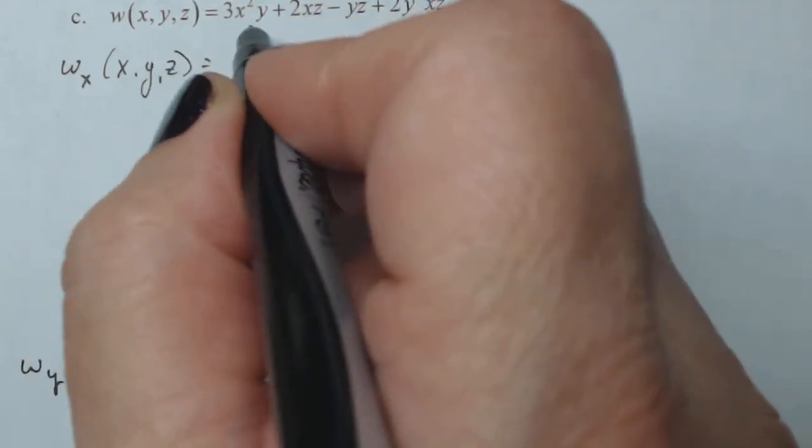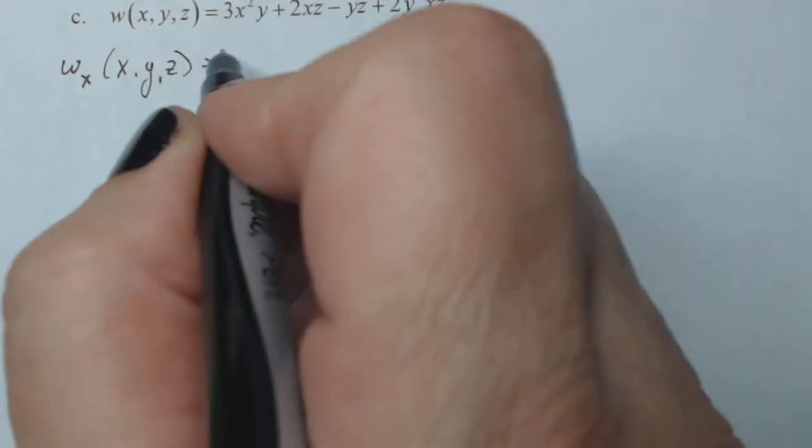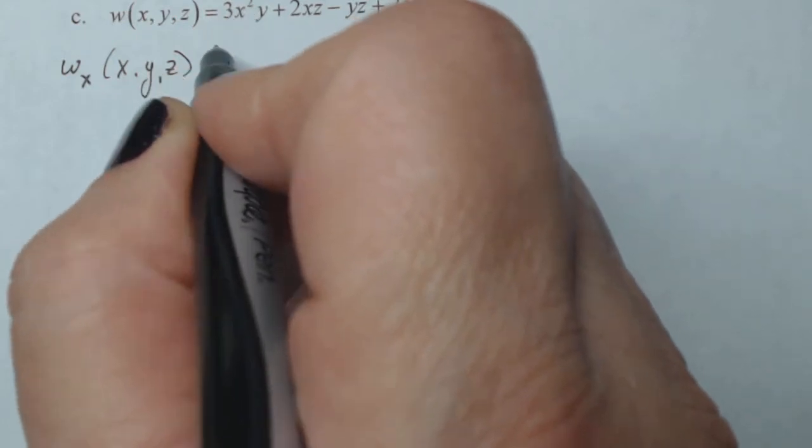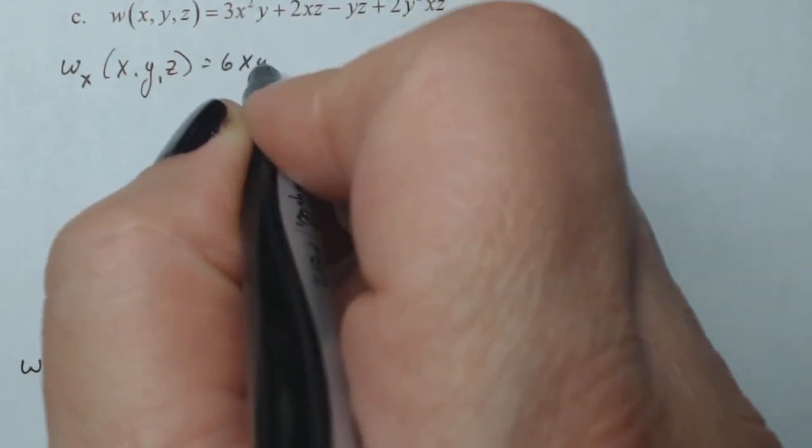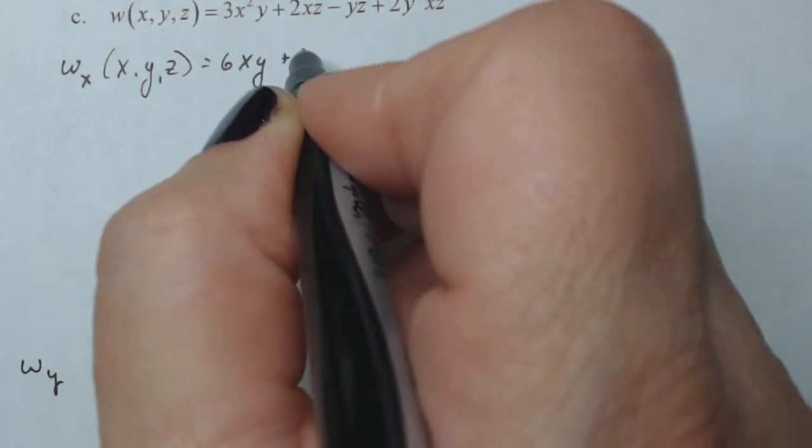So I'm taking the derivative with respect to X, everything else is constant. So this is going to be six X Y plus two Z.